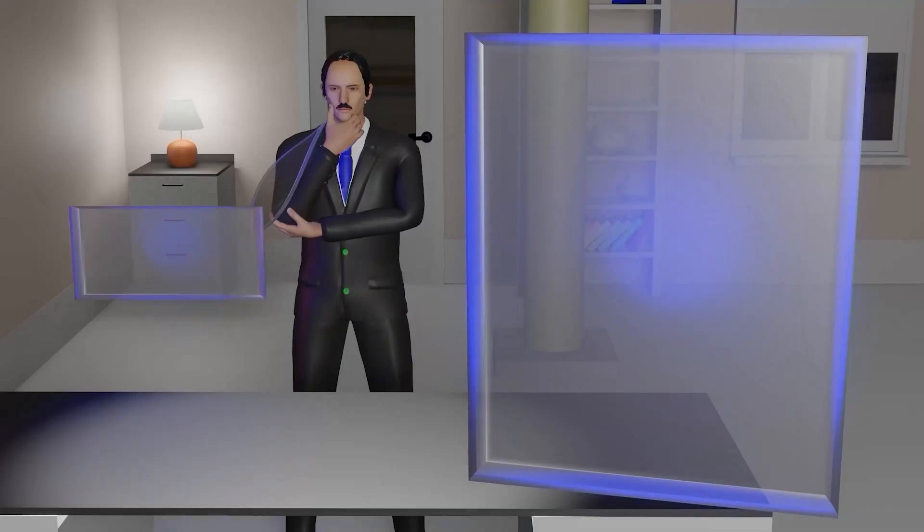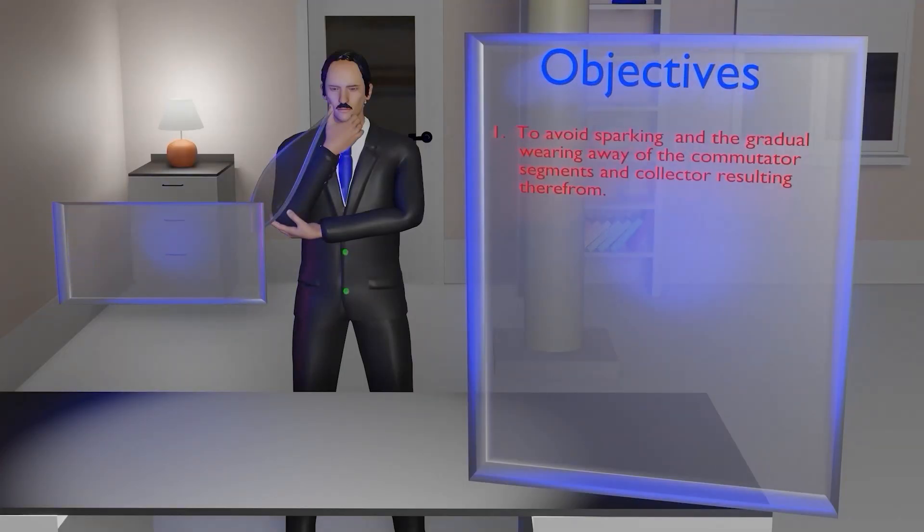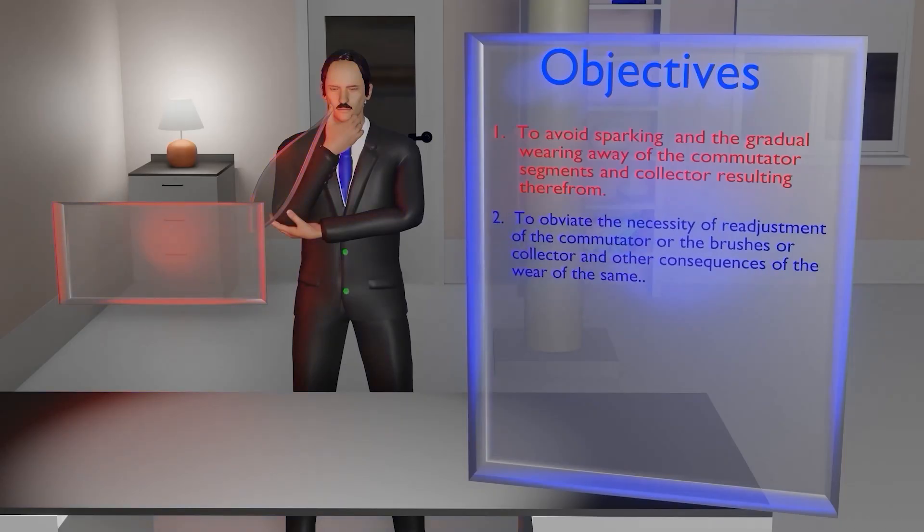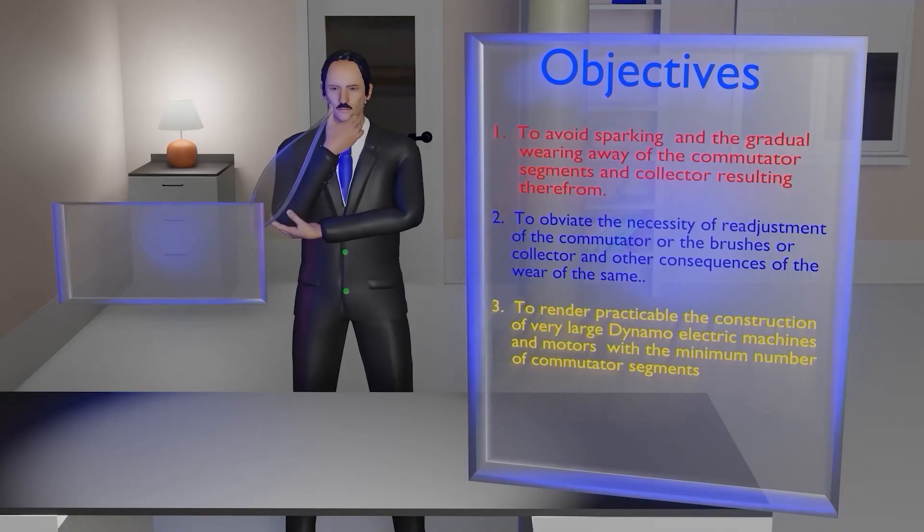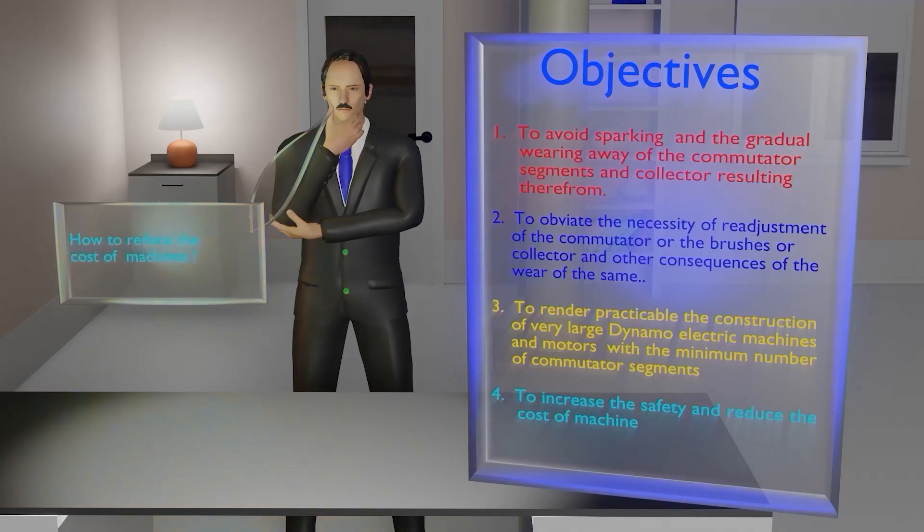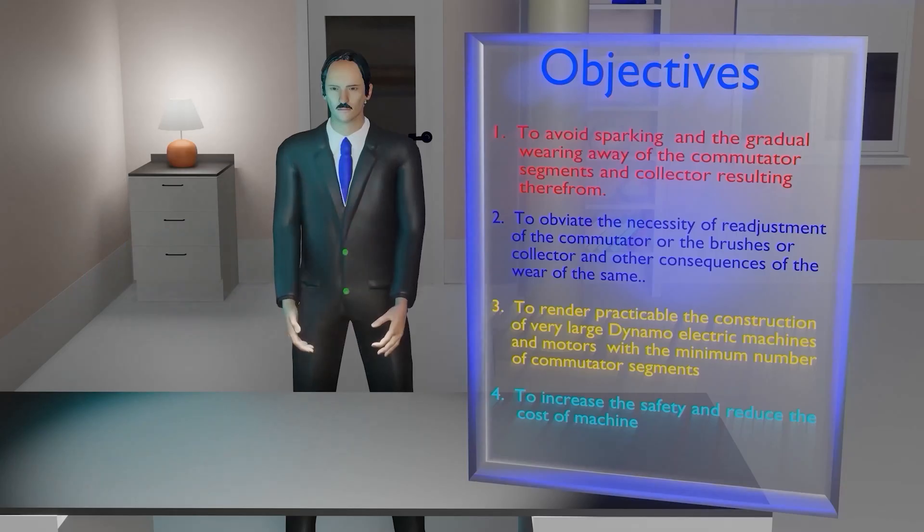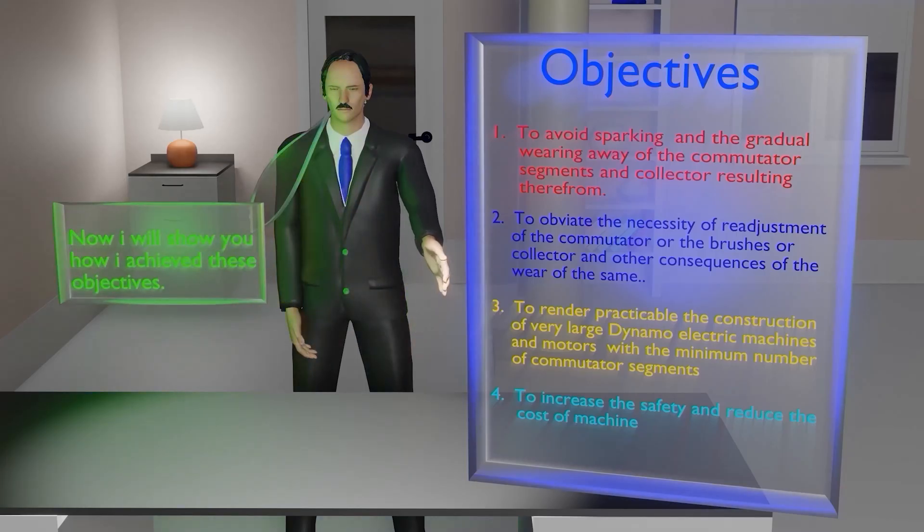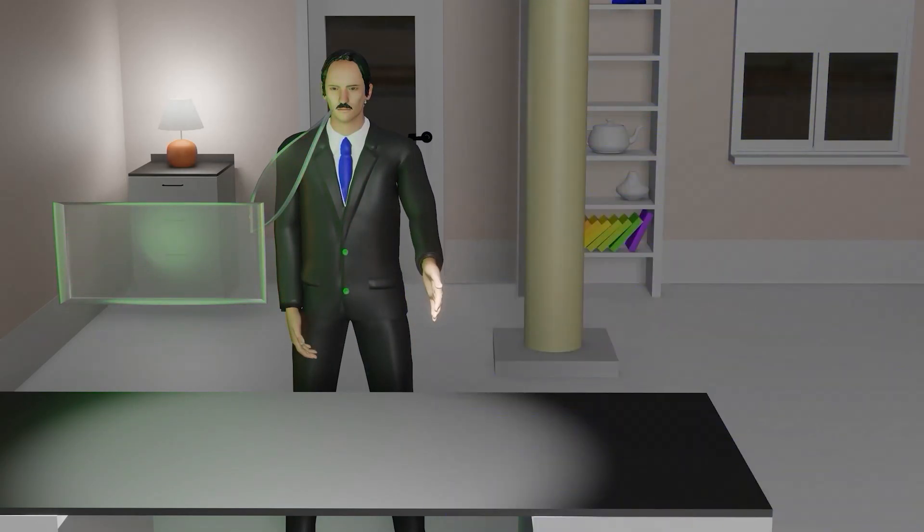Tesla's objectives of the invention were to avoid sparking and the gradual wearing away of the commutator segments and collector resulting therefrom, to obviate the necessity of readjustment of the commutator or the brushes or collector and other consequences of the wear of the same, to render practicable the construction of very large dynamo-electric machines and motors with the minimum number of commutator segments, to increase the safety and reduce the cost of the machine. Now, we will see how Nikola Tesla achieved these objectives through a unique design of commutator.